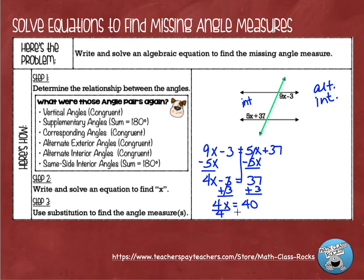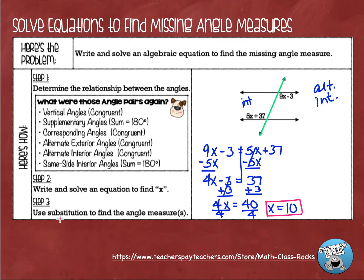I'll divide by 4, and 40 divided by 4 gives me 10. Now we have to be careful — this isn't the answer. These angles don't equal 10 degrees because look how big they are; I can tell just from looking at them that they're larger than 90 degrees. So what I need to do is move on to step 3, which is to use substitution to find the angle measures.